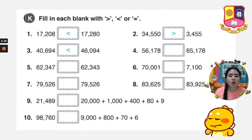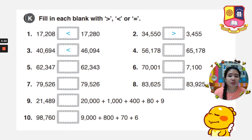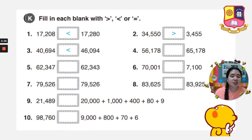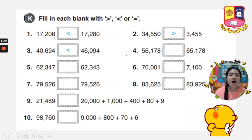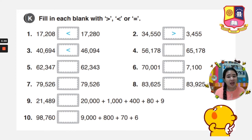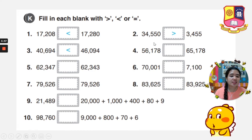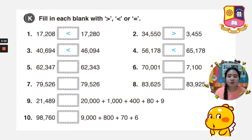Number 4. We have 56,178 and 65,178. Both are 5 digits. Let's compare each number: 5 and 6 — which one is bigger? That is 6, so the answer will be 65,178. The mouth is there.